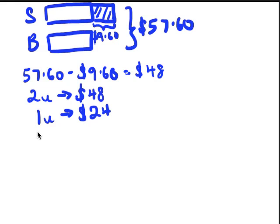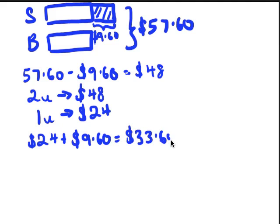So how much does the pair of shoes cost? It equals to one unit plus $9.60. So $24 plus $9.60 will give me the answer of $33.60. First answer, done.